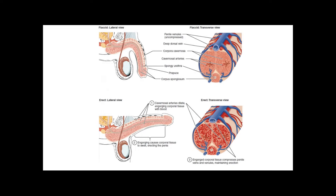Here's another view that recaps what we've been talking about. This is the flaccid state — a penis that is not erect. We can see the corpus cavernosum; they are empty. The muscle is contracted, there's not enough blood flow inside, and veins carry blood away. So there's not enough blood here.